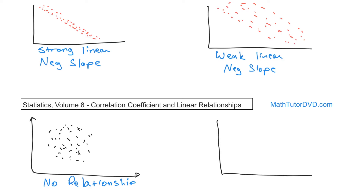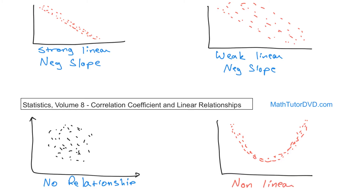Our last case: let's say we have a smiley face — data points that curve like this. Is this a linear relationship? Clearly not. There is no line that goes through these points. Non-linear data sets like this are a totally different subject for a different day. We're talking about correlation among data points and we're looking for linear relationships. This is not a linear relationship, so you write down non-linear. It looks like there could be some relationship here, but it's definitely not linear, so it's outside the scope of what we're discussing with the correlation coefficient.